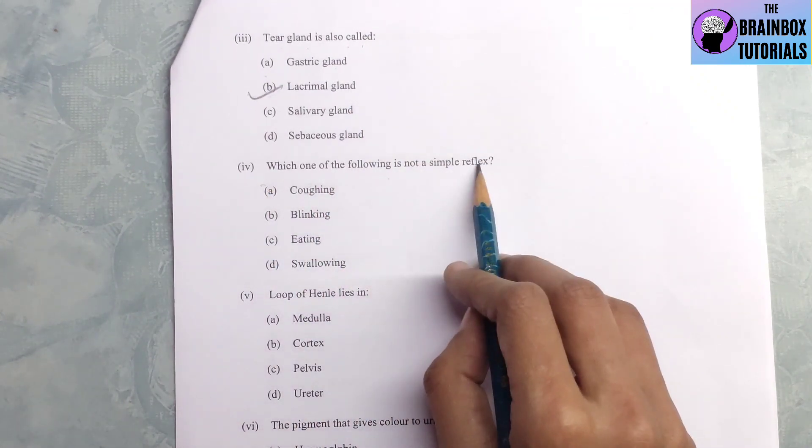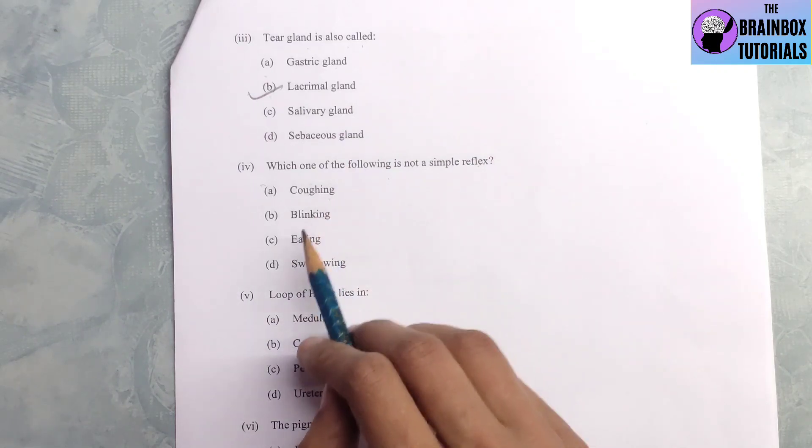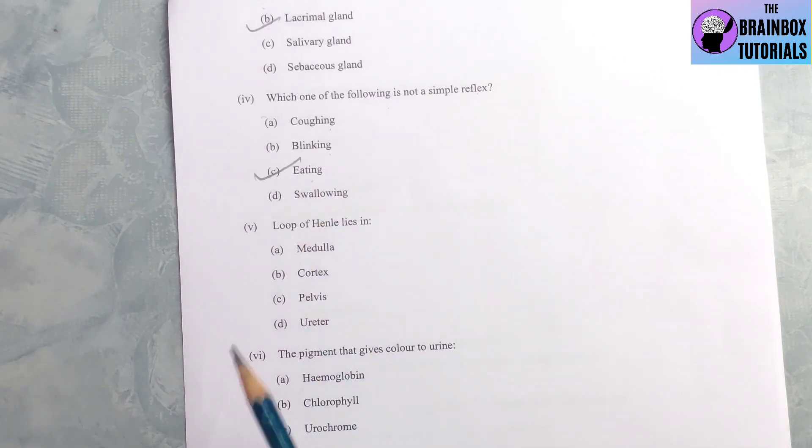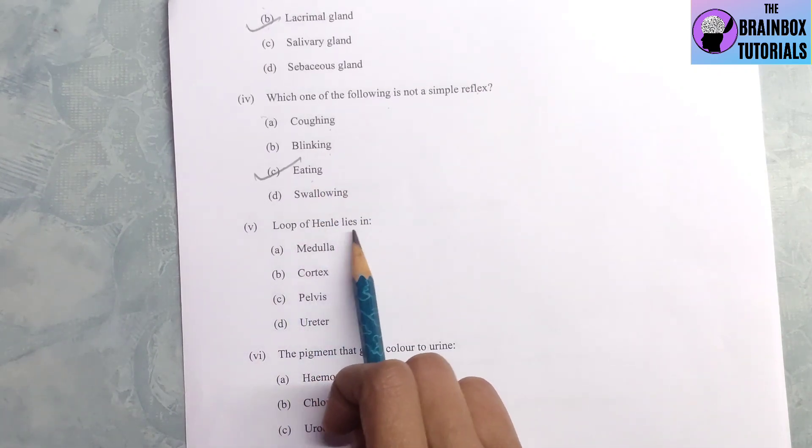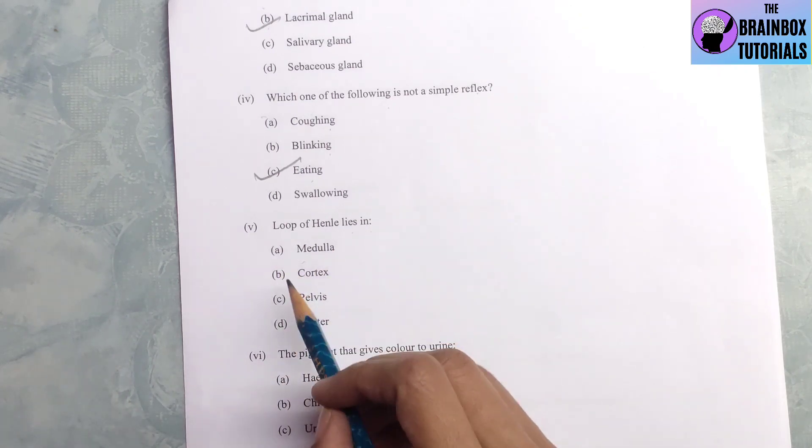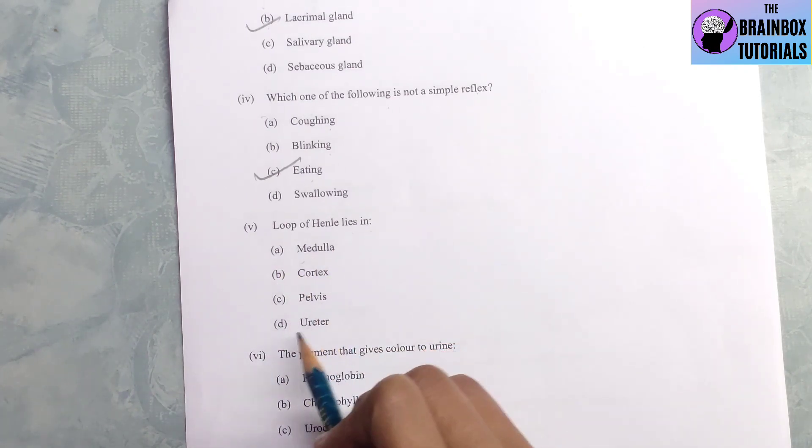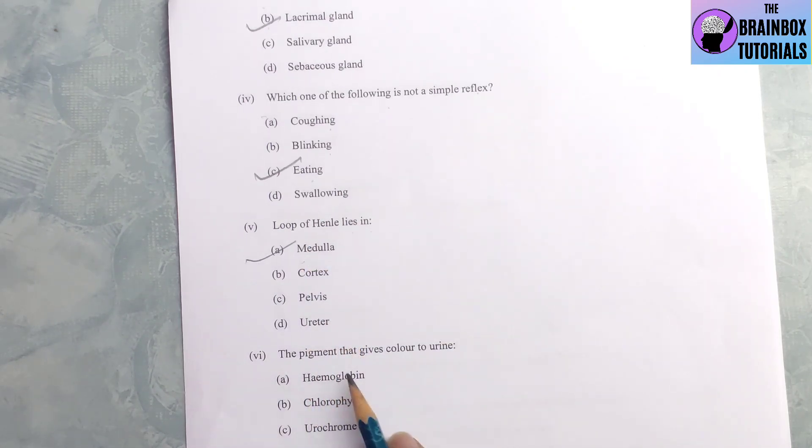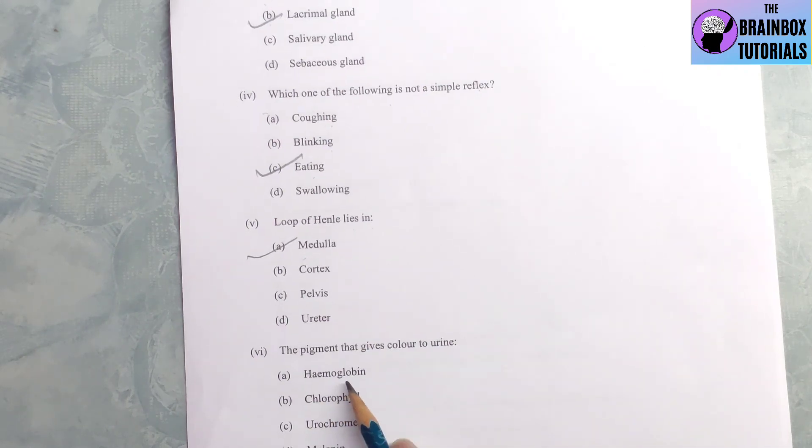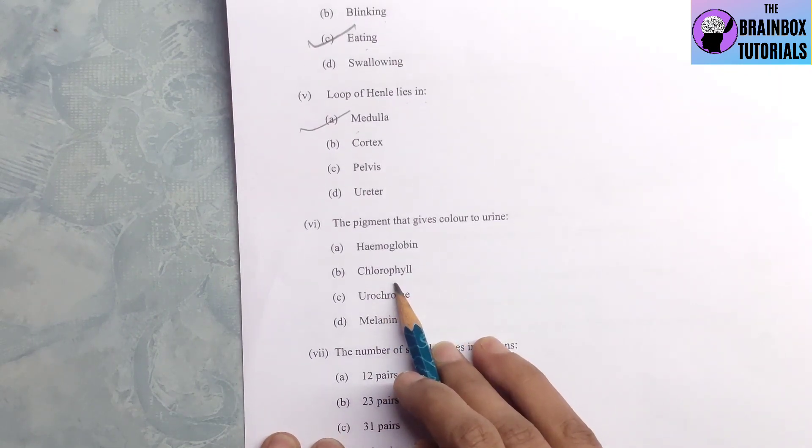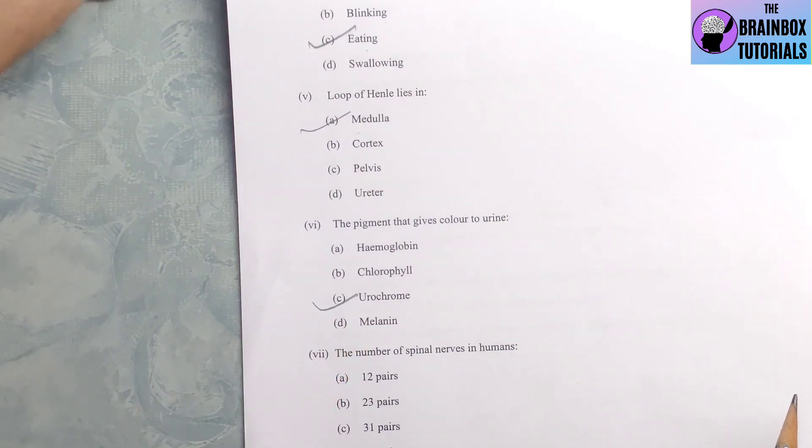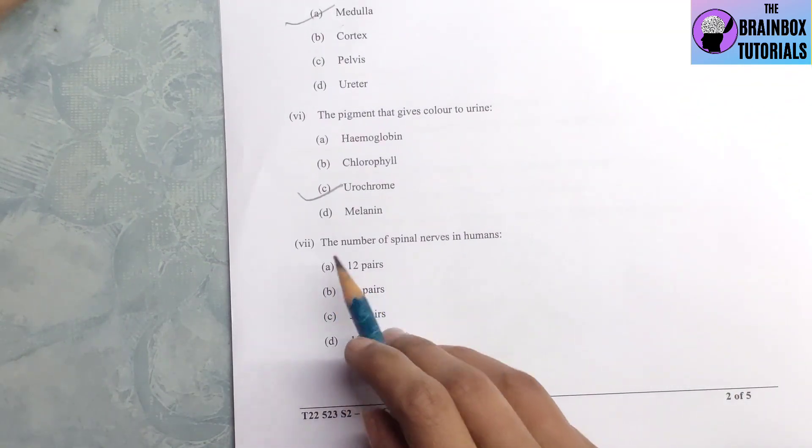Number 4, which one of the following is not a simple reflex? Coughing is a simple reflex. Blinking is simple. Eating is not a simple reflex, so number C. Number 5, loop of Henle lies in medulla, cortex, pelvis or ureter. Number A, medulla is the correct option. Number 6, the pigment that gives color to urine is hemoglobin, chlorophyll, or urochrome. Yes, number C, urochrome is the correct option.